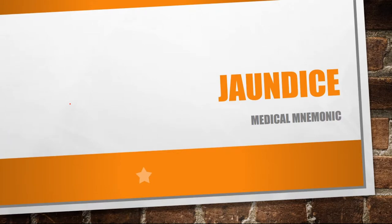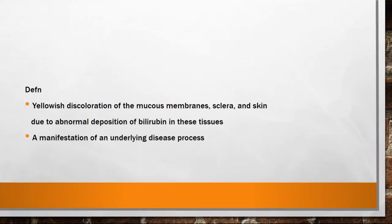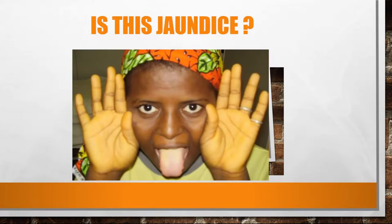Today we'll be discussing jaundice. Jaundice means the yellowish discoloration of the mucous membrane, the sclera, and the skin. If you're only talking about the sclera, then we call it icterus. This is due to abnormal deposition of bilirubin in these tissues. One thing to remember is that jaundice is not a disease — it's just a manifestation of an underlying disease process; it is a symptom.